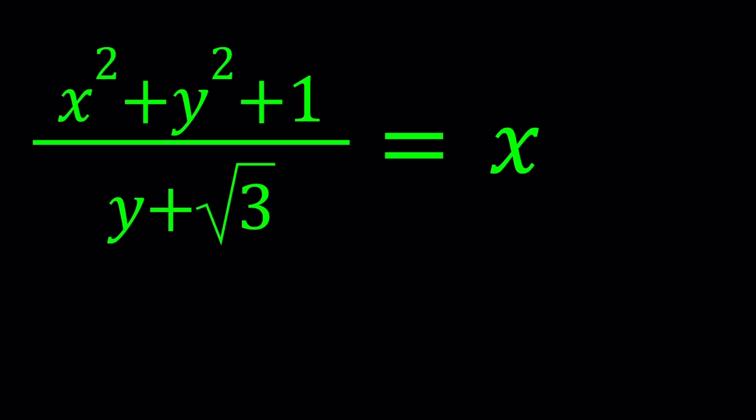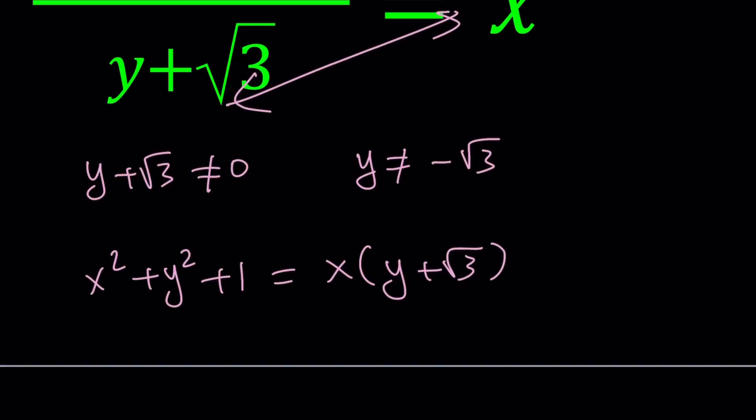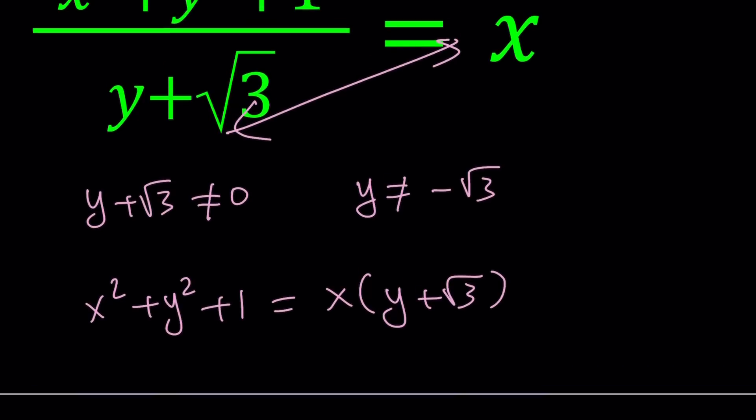First of all, I have to tell you that y plus square root of 3 does not equal 0. That's required, so y does not equal negative root 3. If you get any solution like that, we're going to reject it. Now, let's go ahead and under those conditions, let's cross-multiply. This gives us x squared plus y squared plus 1 equals x times y plus root 3. That is the first step.